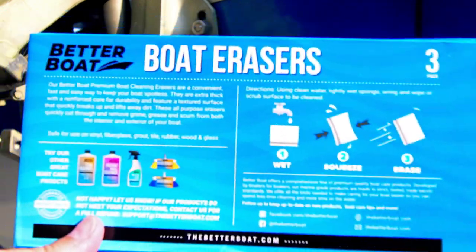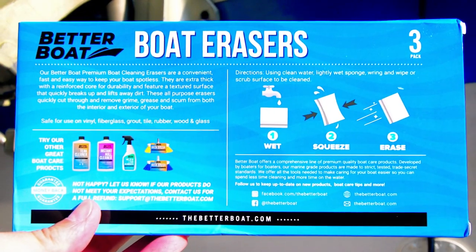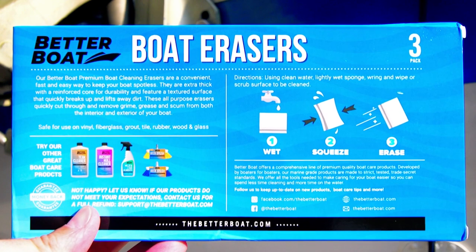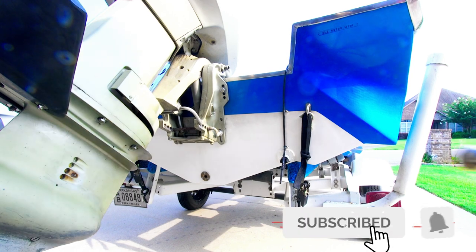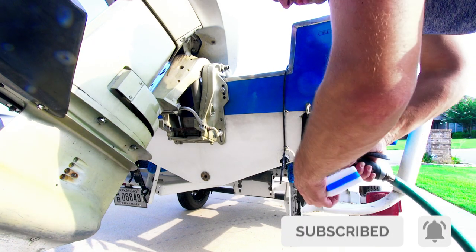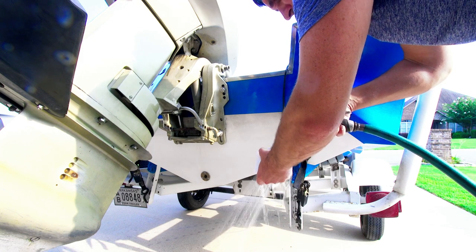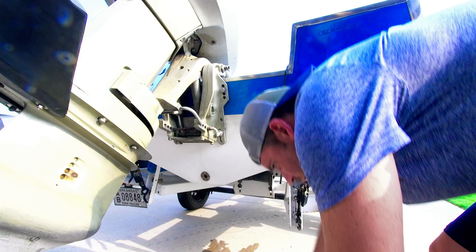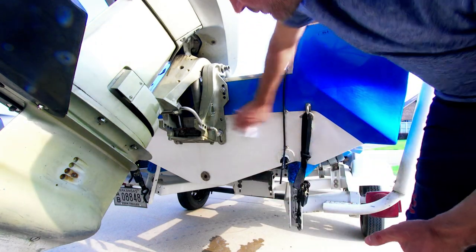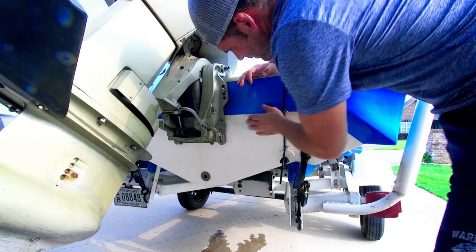Now the transom here is the dirtiest part of the boat. And the boat erasers are meant to be a product that when you get back from the lake, if you don't feel like washing the entire boat with soap and water, you can just use these erasers to do a quick clean job. So that's what I'm going to be doing today. And I thought, well, let's just test how tough these things are and try to clean the transom area. The transom area is notorious for getting this black film from the motor and the water just built up on it.